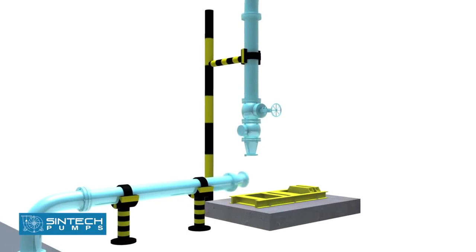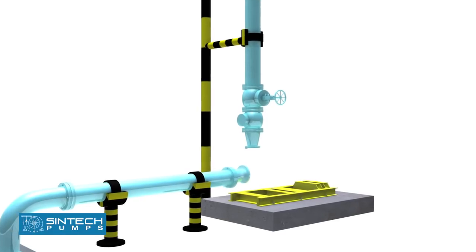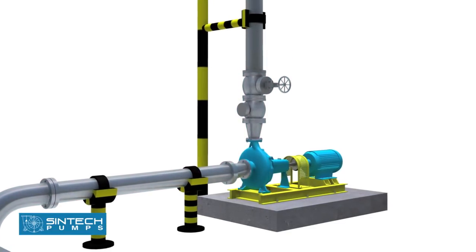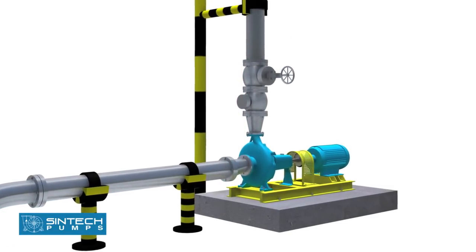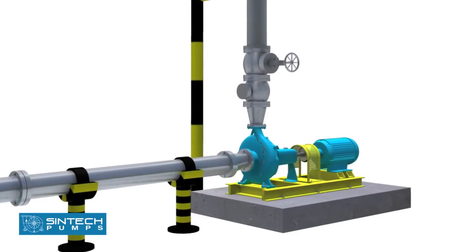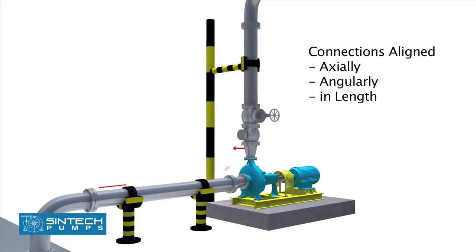Piping associated with the pump must be anchored and supported independently of the pump and should never put any strain on the pump casing. When the pipes are not supported, their weight is borne by the pump casing and may cause them to crack or deflect. It is important that the connections be carefully aligned axially, angularly, and in length.